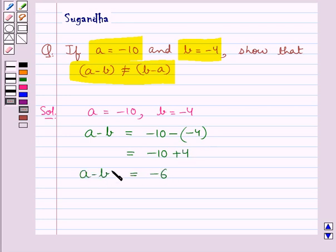Thus we get A minus B is equal to minus 6. Now, consider B minus A. This is equal to minus 4 minus of minus 10.